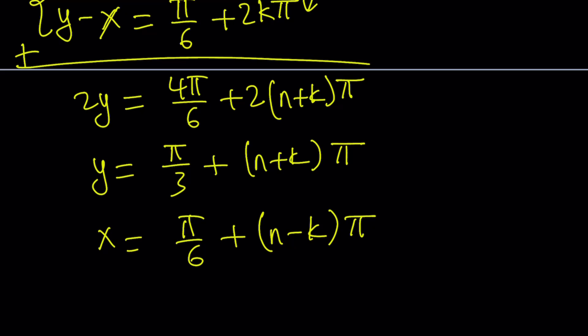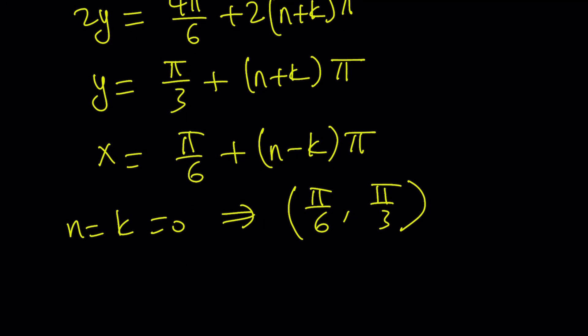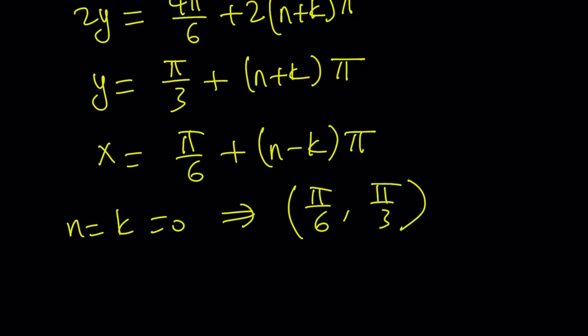And definitely playing with the n and k values, we can write a bunch of solutions. For example, for n and k are equal to 0. So then we get the trivial solutions, pi over 6, pi over 3. When I show you the graph, you'll see that it's one of the points. And the graph is actually pretty interesting. Okay? So anyways, let's go ahead and take a look at the second option.